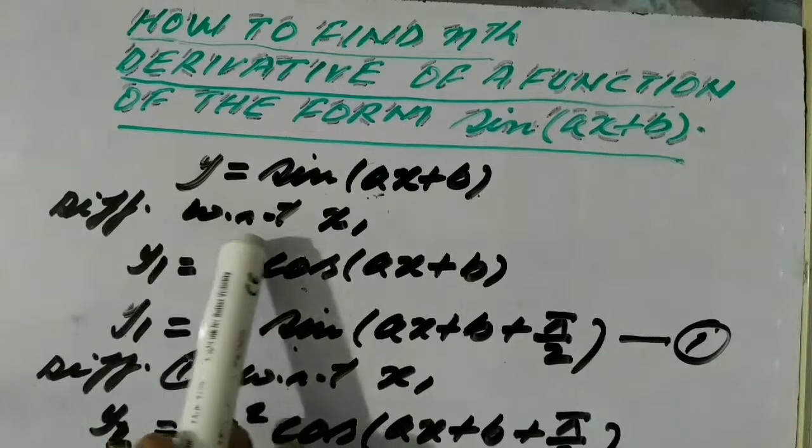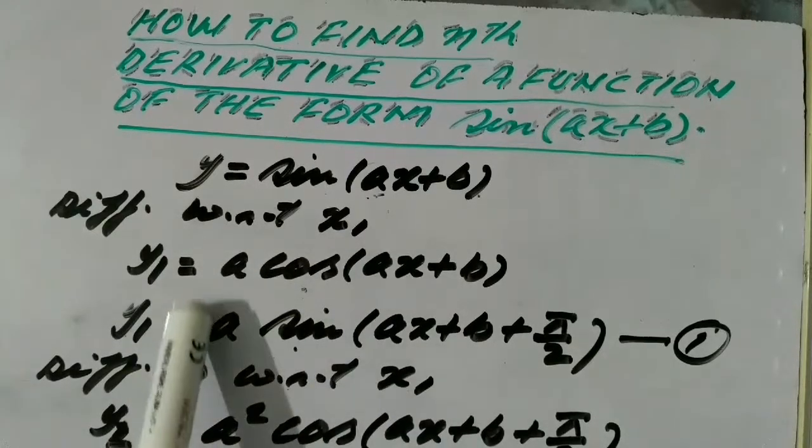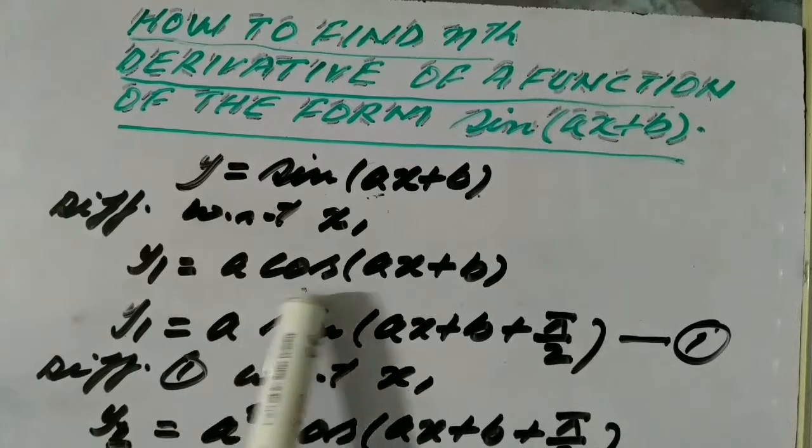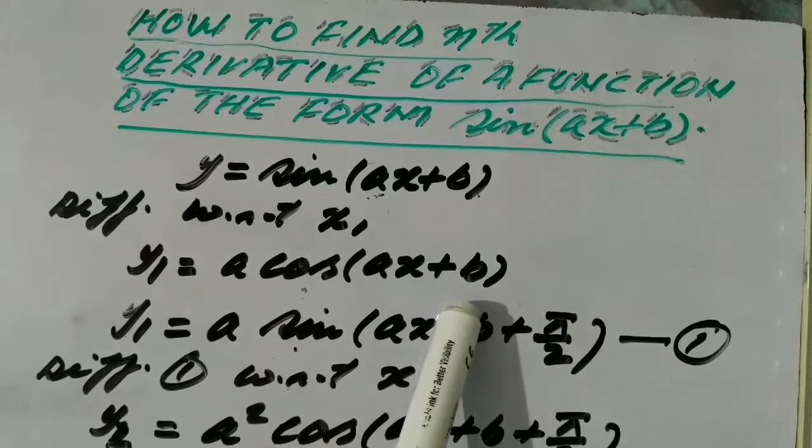Differentiating with respect to x, we get y1 equals a cos(ax+b).